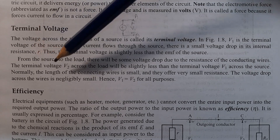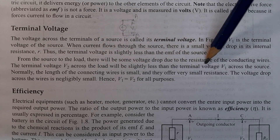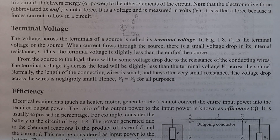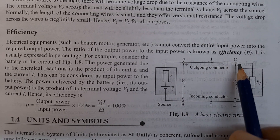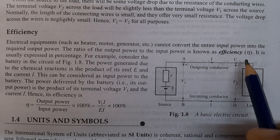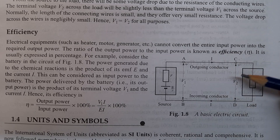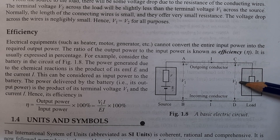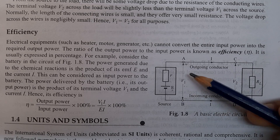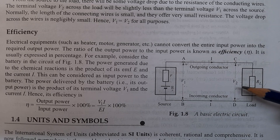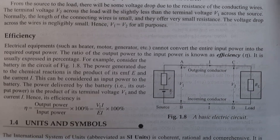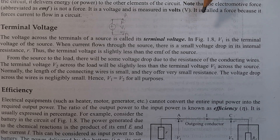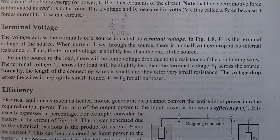The voltage drop is very small. V2, the load voltage, is smaller than V1, the source terminal voltage. The terminal voltage across the load will be slightly less than the terminal voltage V1 across the source, due to voltage drop from the source to load through the resistance of the conducting wires.